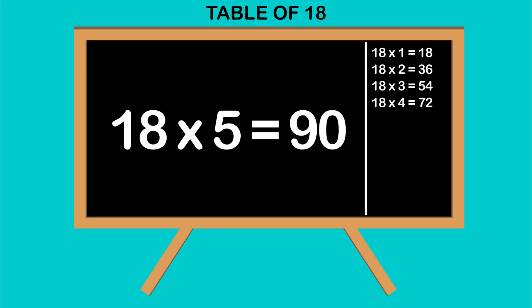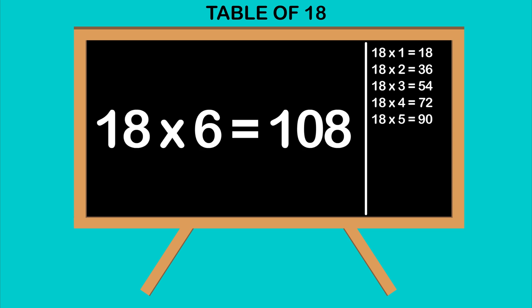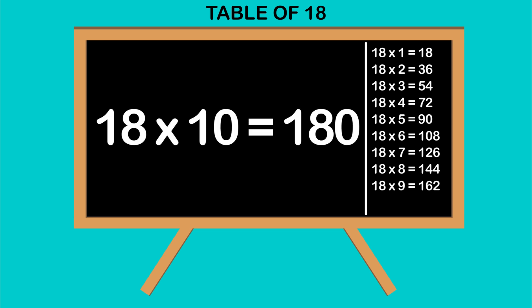18 fives are 90, 18 sixes are 108, 18 sevens are 126, 18 eights are 144, 18 nines are 162, 18 tens are 180.